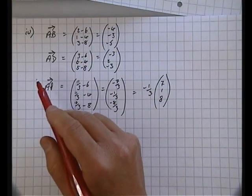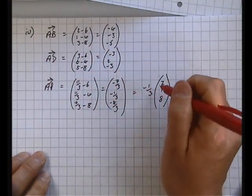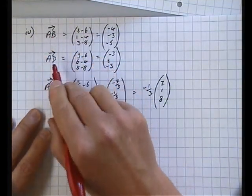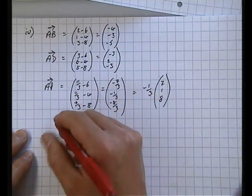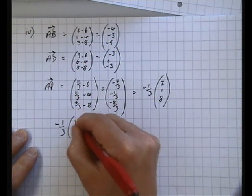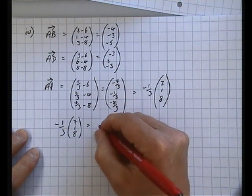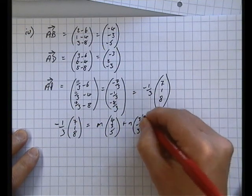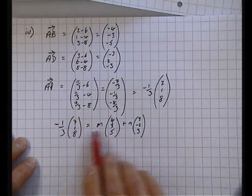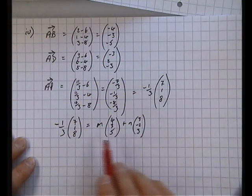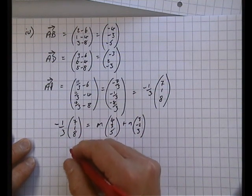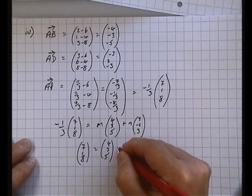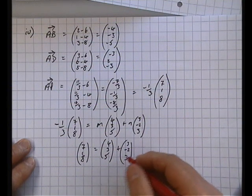Now if P is in the plane A, B, D, then it must be possible to build up this position vector here, AP, from elements of AB and AD. As you move around that plane, any combination of these is going to yield a point in the plane. So notice that -1/3 of (7, 1, 8) is therefore going to be equal to m lots of (-4, -3, -5) plus n lots of (-3, 2, -3). So 7 comes from 4 and 3, and 1 we can make out of 3 and -2, and 8 from 5 and 3. So it looks like if we were to say instead that (7, 1, 8) equals (-4, -3, -5) plus (-3, 2, -3). If we were to spot that, we can therefore say that AP, which is -1/3 of (7, 1, 8).